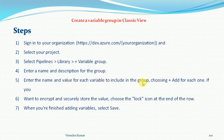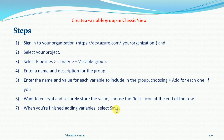Enter the name and value for each variable in the variable group by selecting the plus Add button for each one. If you want to encrypt and secretly store the value, choose the lock icon at the end of the row. When you have finished adding the variables, you can select the Save button. These are the steps to create a variable group.